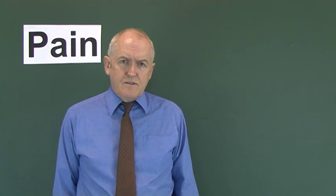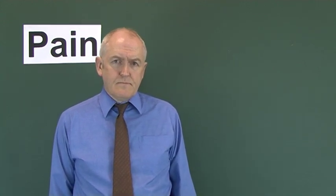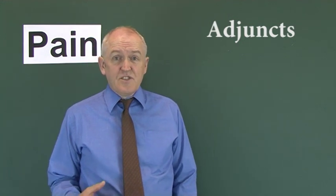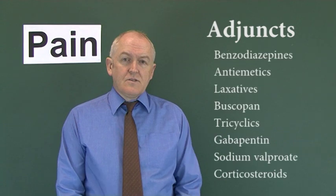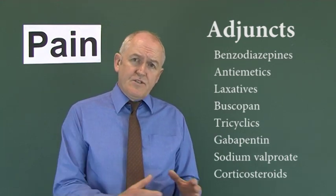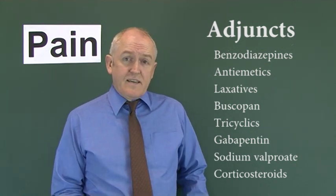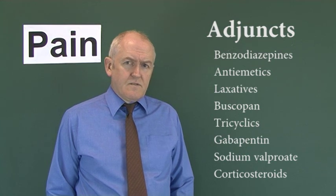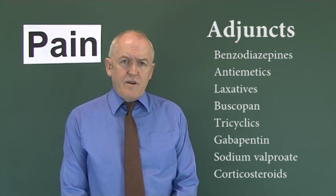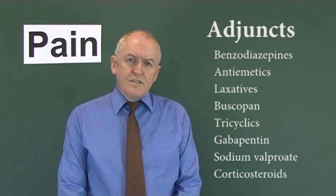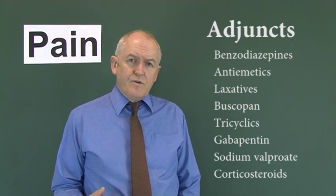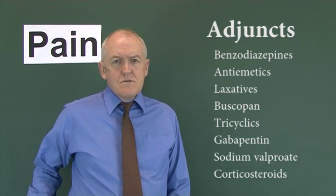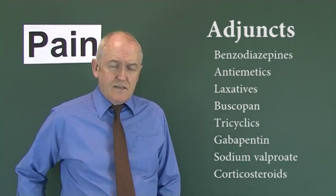The last thing to cover is adjuncts. An adjunct is something we give with an analgesic. We mentioned benzodiazepines to calm the patient and reduce anxiety — with an analgesic we might give diazepam, or nitrazepam if the patient is having difficulty sleeping. We don't like using benzodiazepines for long periods, but for a few days they can be very effective. Opioids can cause nausea, so very often we give antiemetics alongside — for example, metoclopramide — to anticipate the possibility that the patient could be nauseated and sick.